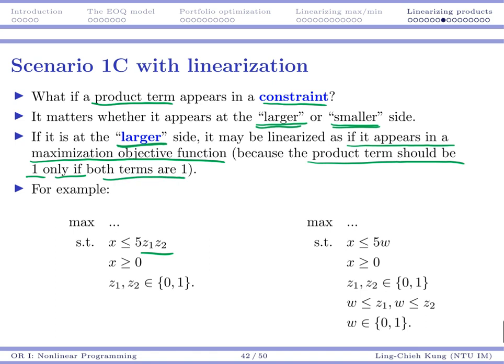So it's not going to be too surprising for you. If you write it as w, then w should be less than or equal to z1 and w should be less than or equal to z2.